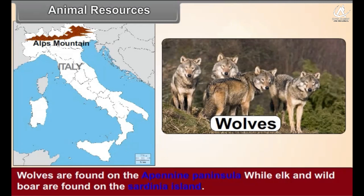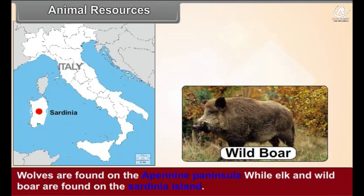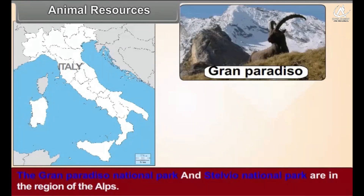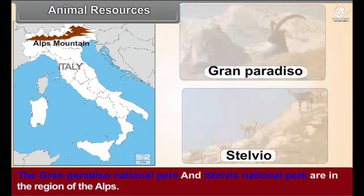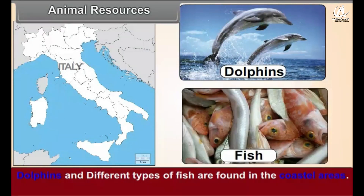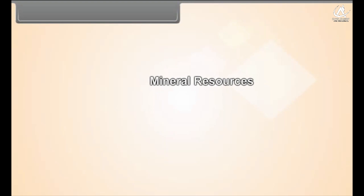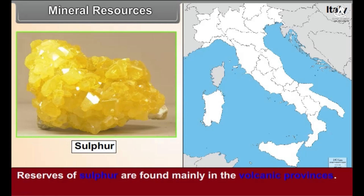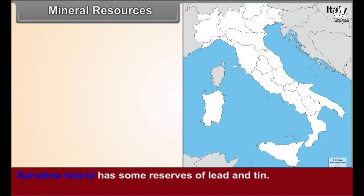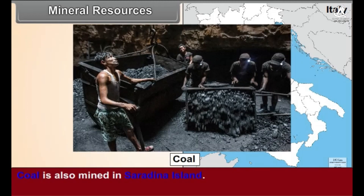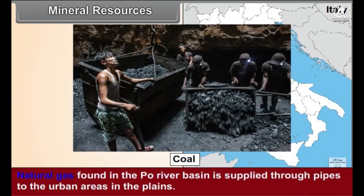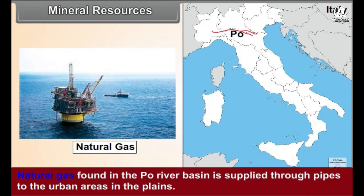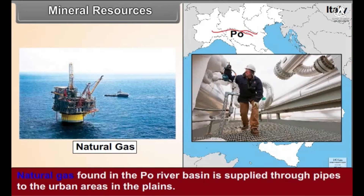Animal Resources: Bears and deer are found in some parts of the Alps. Elk and wild boar are found in Sardinia island. The Grand Paradiso National Park and Stelvio National Park are located in the Alps region. Dolphins and different types of fish are found in the coastal areas. Mineral Resources: Italy is a leading sulfur-producing country. Reserves of sulfur are found mainly in the volcanic provinces. Sardinia island has some reserves of lead and tin. Coal is also mined in Sardinia island.